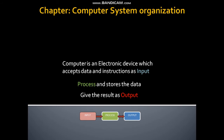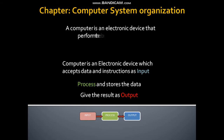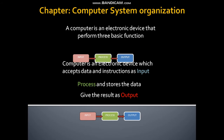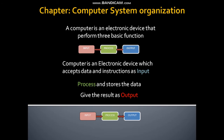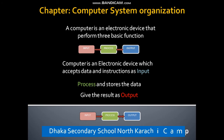Now I will explain this process in a computer. A computer is an electronic device that performs three basic functions: input, process, and output. It accepts data and instructions as input, processes and stores the data, and gives the result as output.